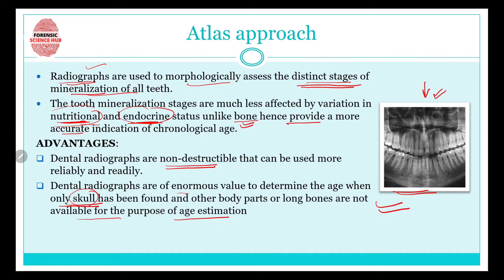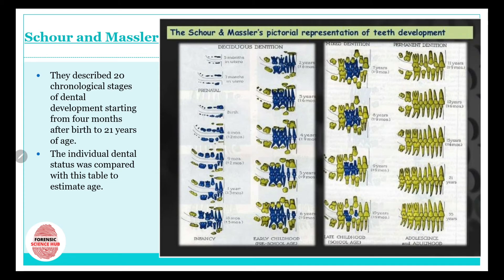When only the skull is found, dental radiographs become even more important because we don't have any other part available for age estimation. The second method is Schour and Massler's method. Schour and Massler described 20 different chronological stages of dental development, starting from four months after birth to 21 years of age. Here is a picture showing all those 20 stages. The blue colored portions show the deciduous dentition — the primary teeth.